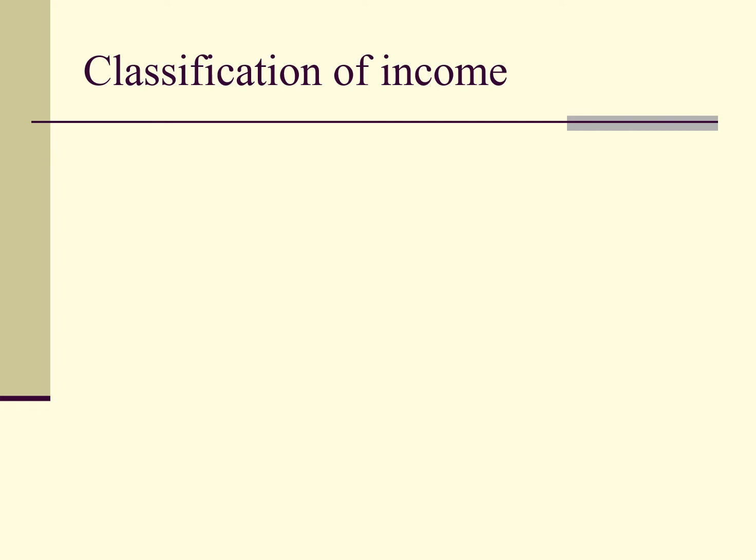The way to approach this area of study is to understand the classification of the income first. The text covers the basic U.S. rules for income classification, covering all types of income from inventory to services. These rules are binding on all taxpayers subject to U.S. taxation, including both U.S. companies doing business in the United States and abroad and foreign companies selling products and services to U.S. customers.